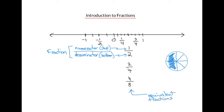We call the fractions that occupy the spaces between the whole numbers negative 1 and 1 proper fractions. For proper fractions, the numerator or top number is less than the denominator or bottom number. For example, for these fractions, the top number is always less than the bottom number.